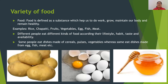Different eating habits also depend on taste and availability. Some people like to eat dishes made from cereals, pulses, and vegetables, whereas some like to eat dishes made from egg, fish, meat, etc. Now, cereals, pulses, and vegetables — where are they obtained from? They are obtained from plants, whereas egg, fish, meat, milk, and honey are food which we get from animals.